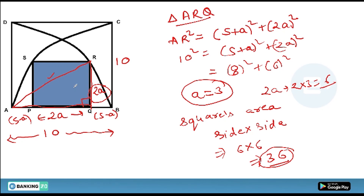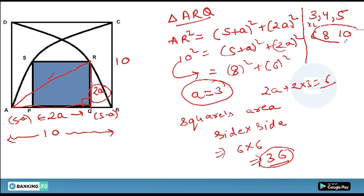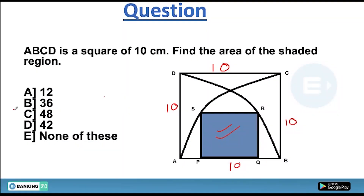Using the triplet shortcut: 3-4-5 multiplied by 2 gives 6-8-10. Since the hypotenuse is 10, the sides must be 6 and 8. This directly gives 2a = 6, so the inner square's side = 6. Area of shaded inner square = 6 × 6 = 36 cm².